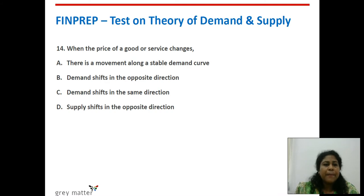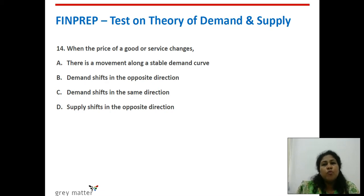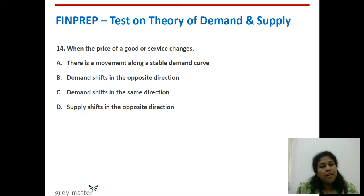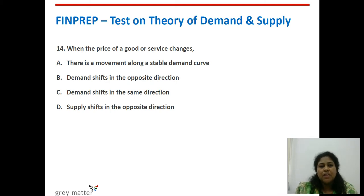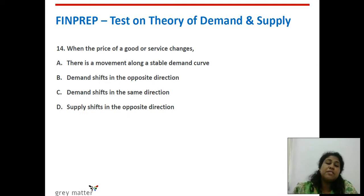Fourteenth question: when the price of a good or service changes, what happens? As stated, the clue for price changes is movement along the same demand curve. Option A — there is a movement along a stable demand curve — yes, that is the right answer. Options B, C, and D are all talking about shifts in the demand curve, which are not caused by price changes. Option A is the right answer.